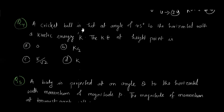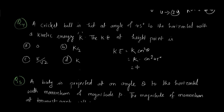Question 4: A cricket ball is hit at 45° to the horizontal with kinetic energy K. What is the kinetic energy at the highest point? Using KE = k·cos²θ: at θ = 45°, cos45° = 1/√2, so cos²45° = 1/2. Therefore KE at highest point = K × (1/2) = K/2. The correct answer is option B.